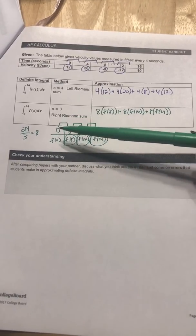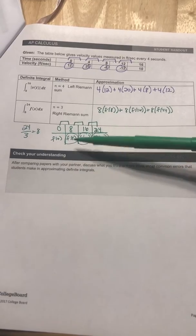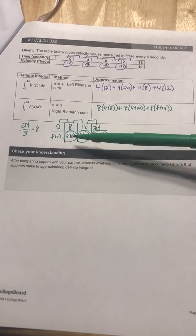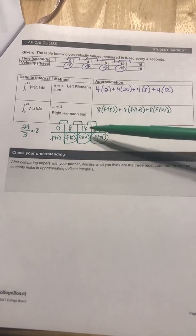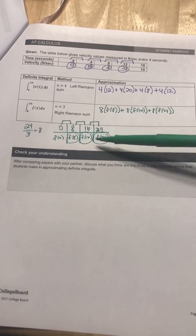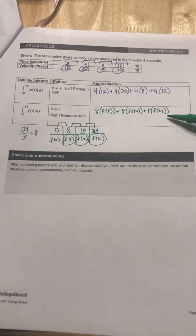And they want you to use the right endpoints, so from 0 to 8, the right height would be f(8). From 8 to 16, the right height would be f(16), and from 16 to 24, the right height would be f(24), which is what you write up here.